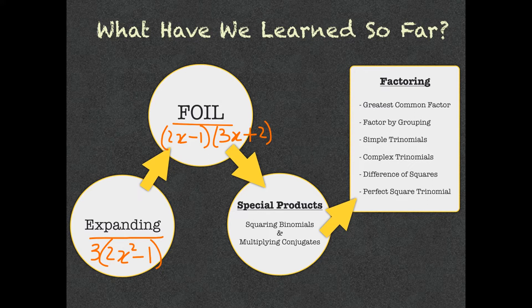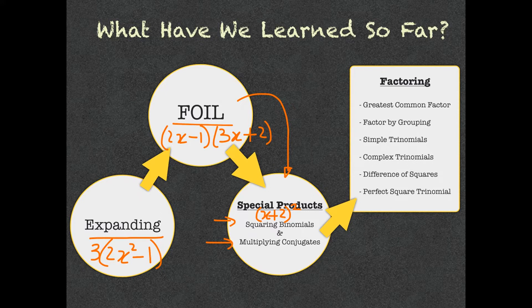To solve that using FOIL, you take the First two numbers and multiply them, then the Outer, the Inner, and then the Last. Closely related to FOIL are the special products, of which there were two types: squaring binomials and multiplying conjugates. Squaring binomials is when a binomial is multiplied by the exact same binomial, like (x + 2) squared. Multiplying conjugates is when two binomials have the same terms but differ only in sign. If you don't remember those patterns, you can just use regular FOIL.